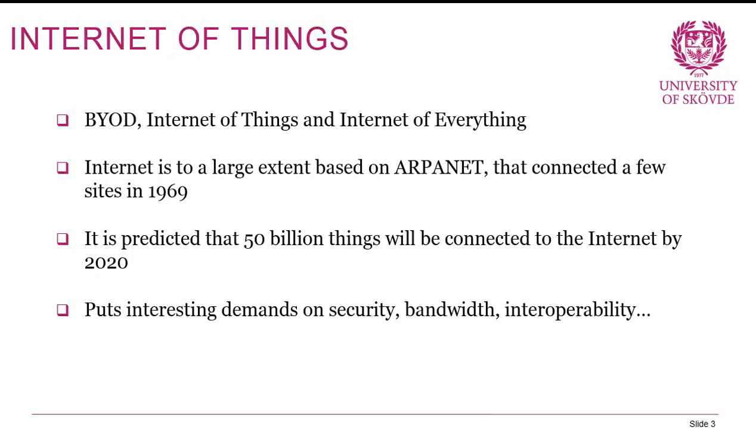We'll begin with Internet of Things. The Internet has had a large evolution, which I think is quite interesting to contemplate. The Internet is to a very large extent based on ARPANET, which connected a few sites back in 1969, and now we have billions of things connected. It's predicted by Cisco that 50 billion things will be connected to the Internet by 2020. We've seen an evolution from a couple of computers, to large local area networks, to virtualizing stuff, to connecting cell phones, to now connecting everything basically.